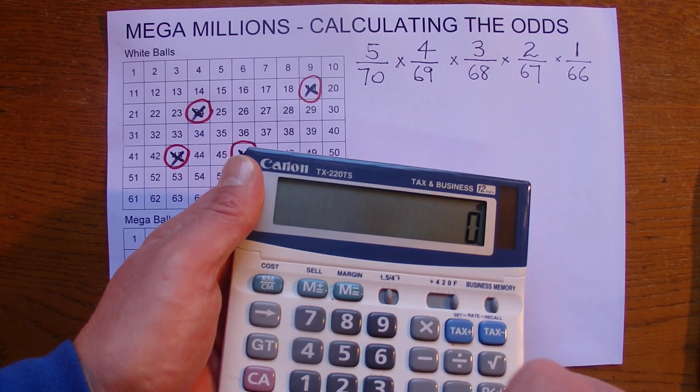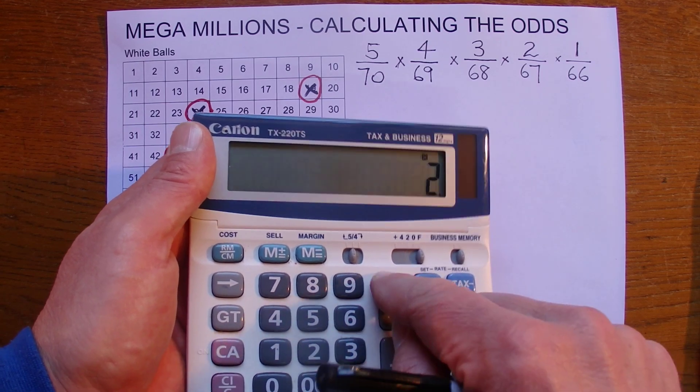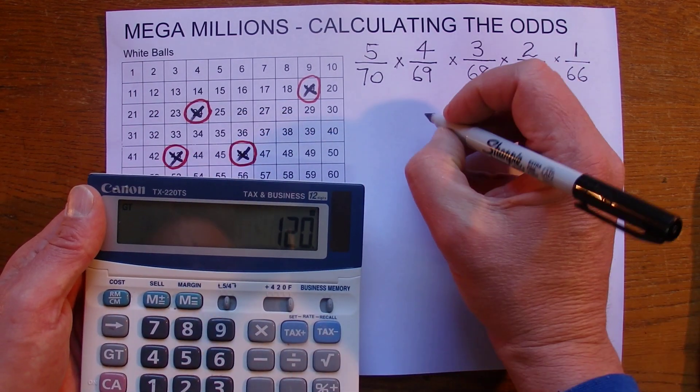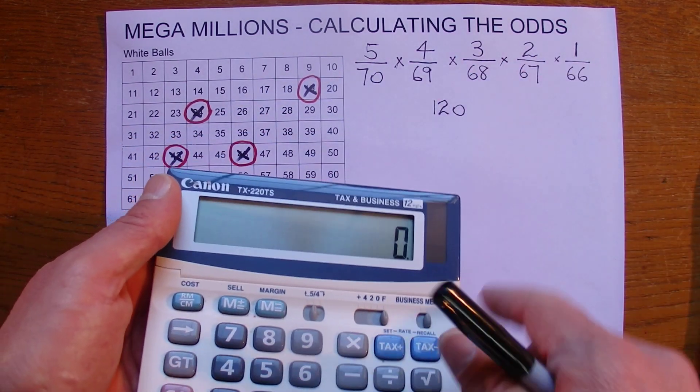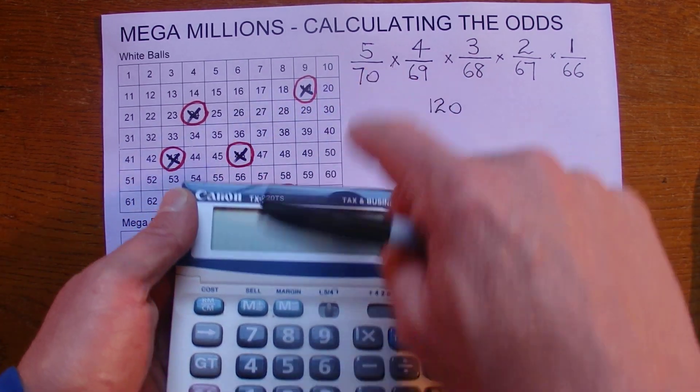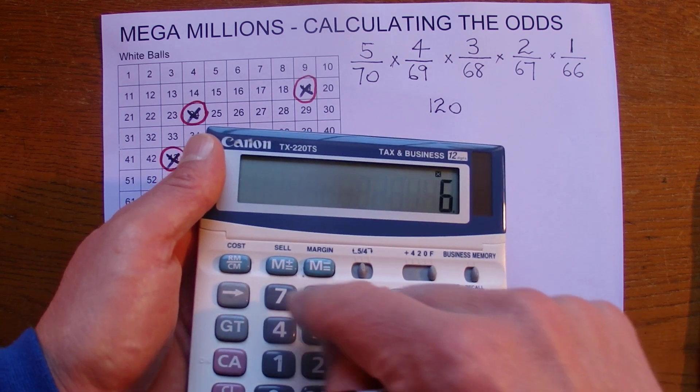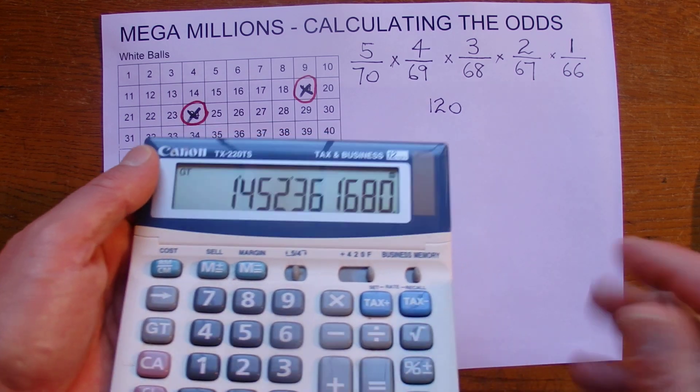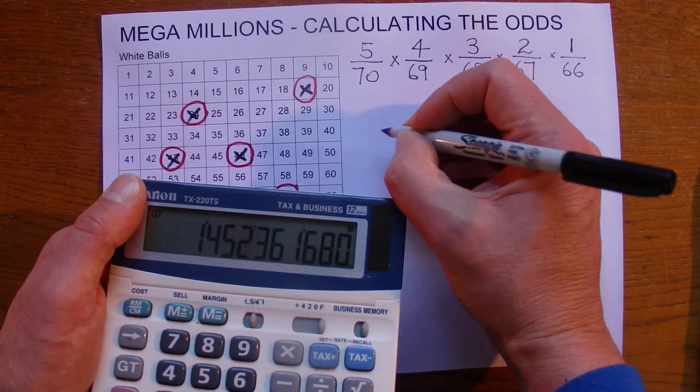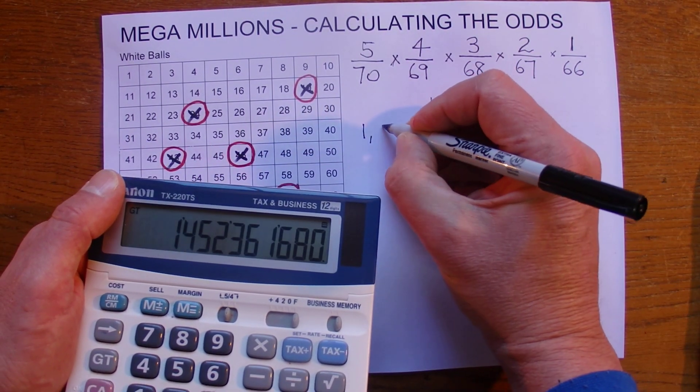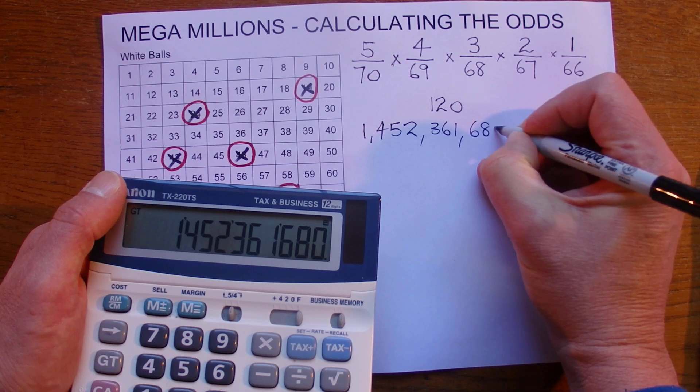So let's calculate that out on my trusty calculator. So we'll do the top line first which is 5 times 4 times 3 times 2 times 1 equals 120. So we've got 120 chances out of, and multiply the bottom row, 70 times 69 times 68 times 67 times 66. So we've got 120 chances in around about 1.4 billion. So we'll write that number down there exactly. 1,452,361,680.